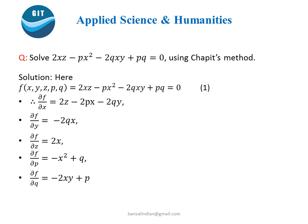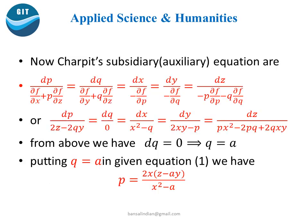We have taken an example here: solve 2xz − px² − 2qxy + pq = 0 using Charpitt's method. We can see f(x, y, z, p, q) = 2xz − px² − 2qxy + pq = 0. Differentiating this function with respect to x, y, z, p and q separately, we get ∂f/∂x = 2z − 2px − 2qy.